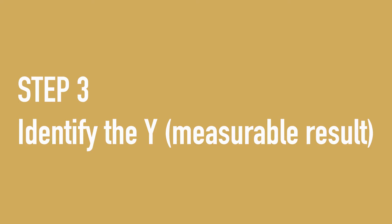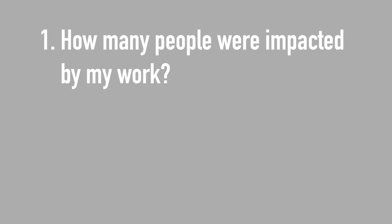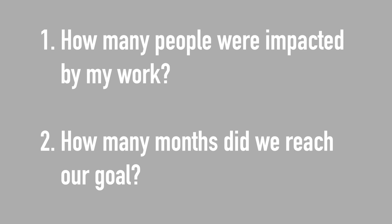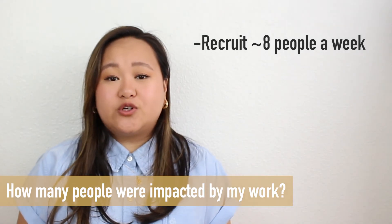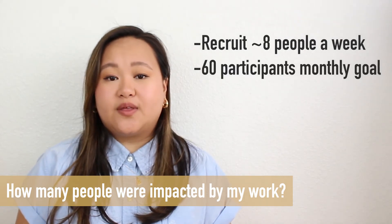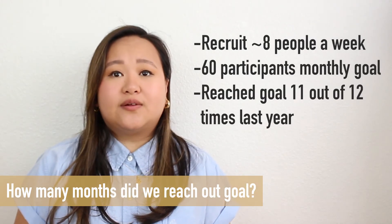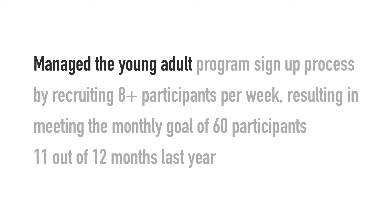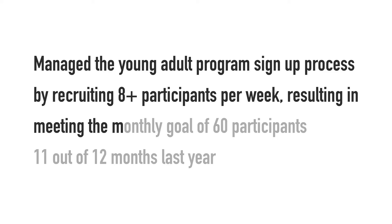Now that you know your impact, step three is to back up your impact with numbers and include a measurable result — the Y in our equation. This is how we measure impact. Taking the statement from the last step, I want to think about the relevant numbers. I helped recruit about eight people per week to sign up, which helped us reach our goal of 60 participants per month. We reached our goal every month last year except for one. I'll update my statement to: 'Manage the young adult program sign-up process by recruiting eight plus participants per week, resulting in meeting the monthly goal of 60 participants 11 out of 12 months last year.'